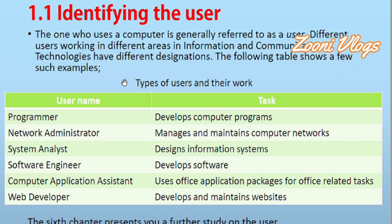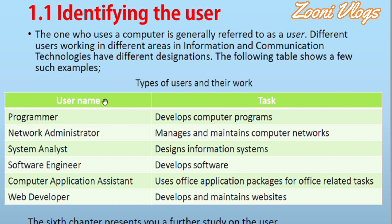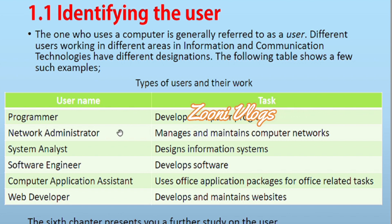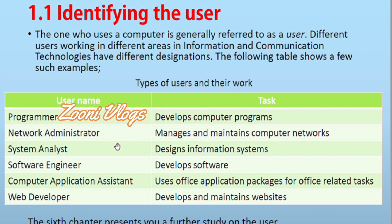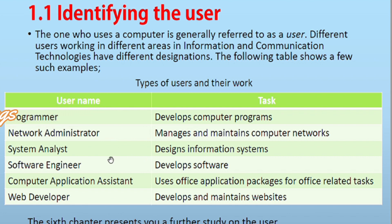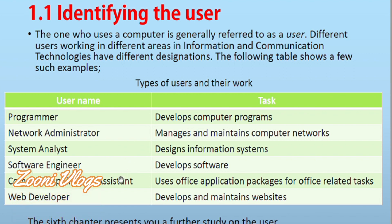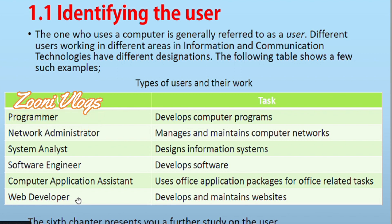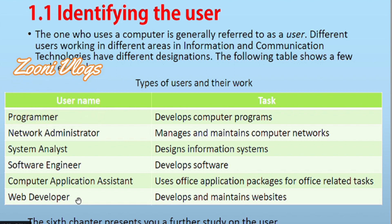Here you can see the username and the task. As a user, if I take a programmer, his task is to develop computer programs. A network administrator manages and maintains computer networks. A system analyst designs information systems. A software engineer develops software. Computer communication application packages are for office-related tasks. A web developer develops and maintains websites. The sixth chapter presents a further study of the user.